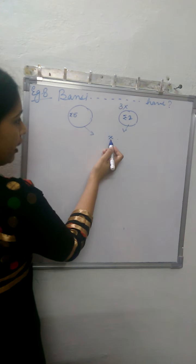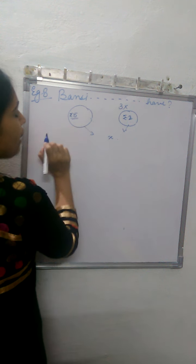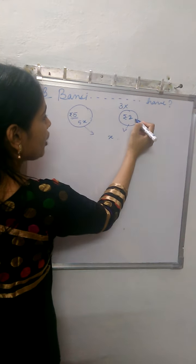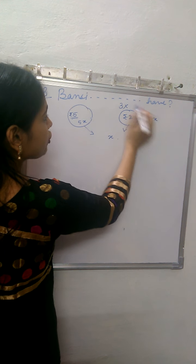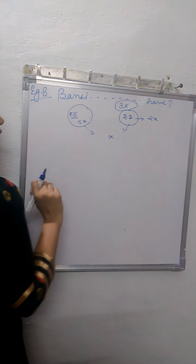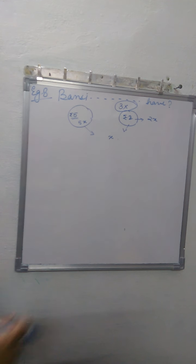If the coins is X, that means 5 rupee coins will be 5X, and 2 rupee coins will be 2X multiplied by 3, which is 6X, because it is 3 times the number of 5 rupee coins. 3 times the number, not the amount.